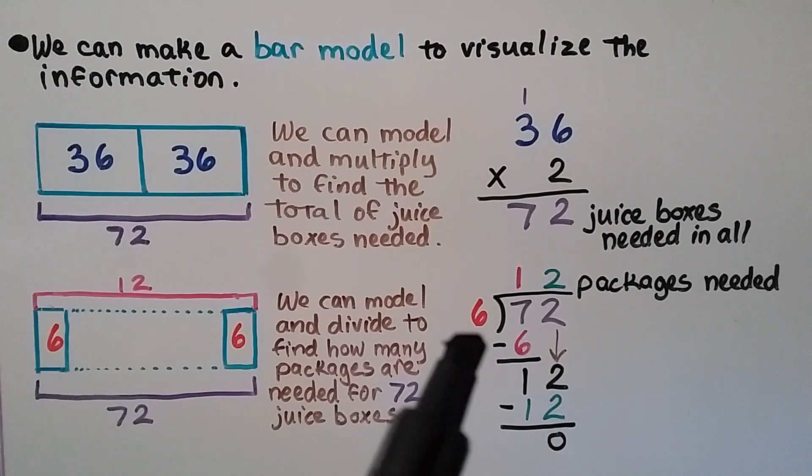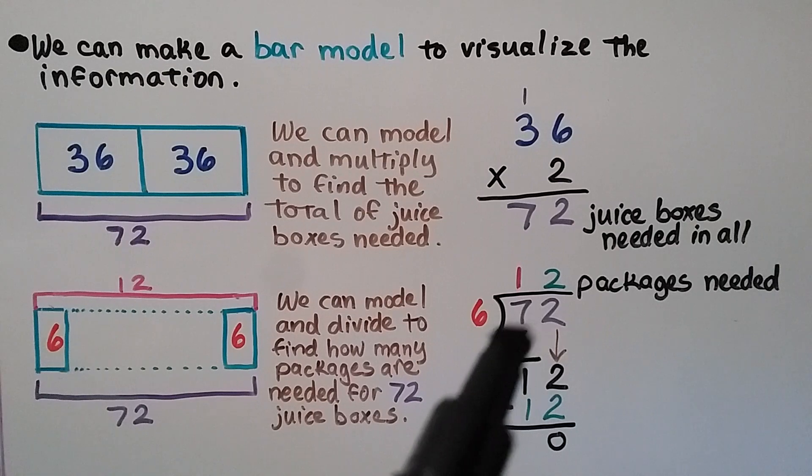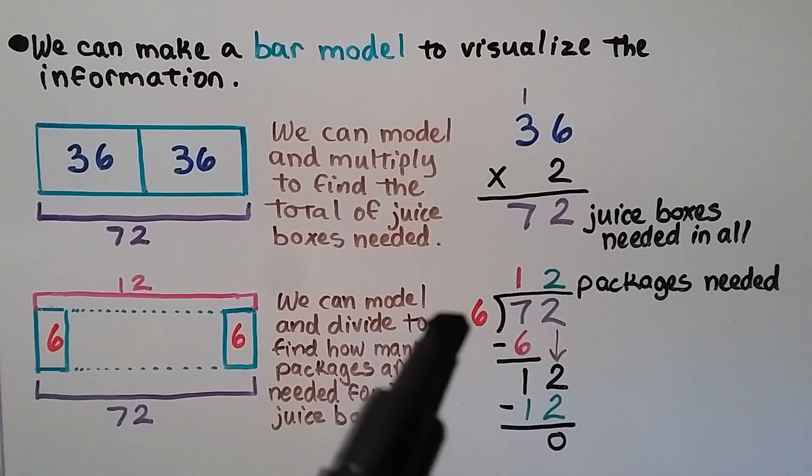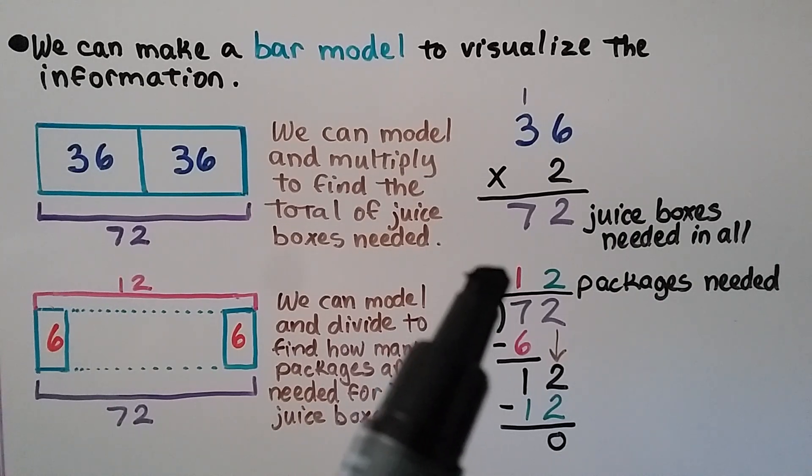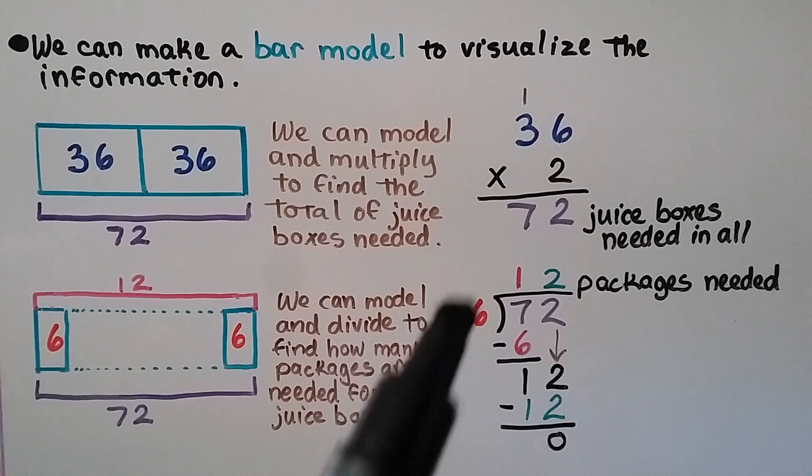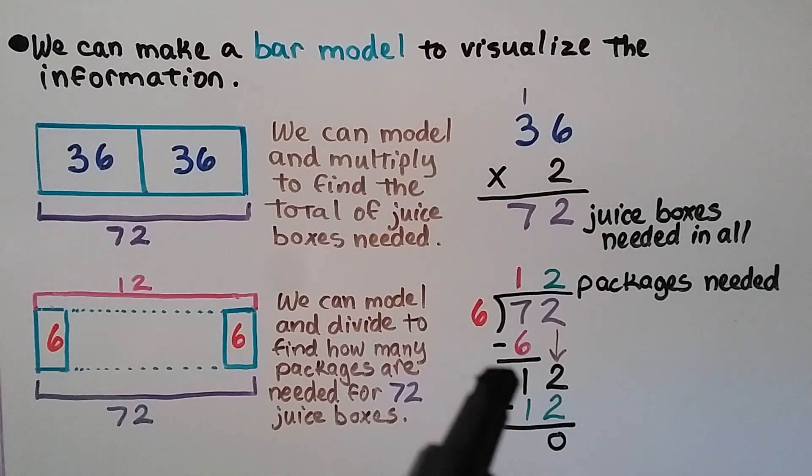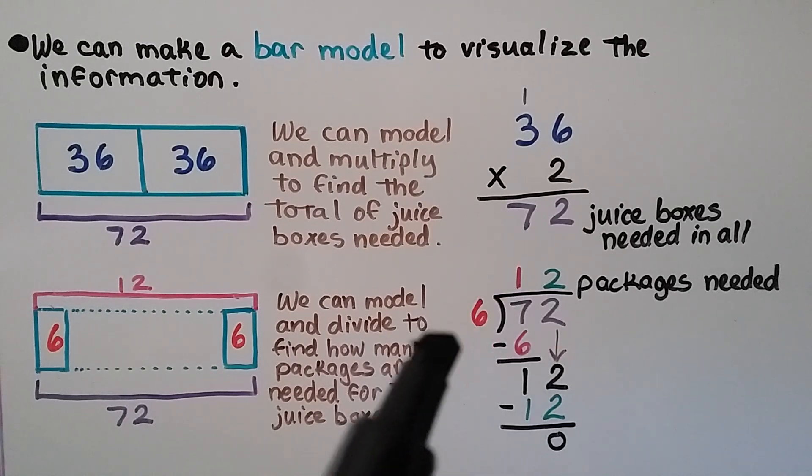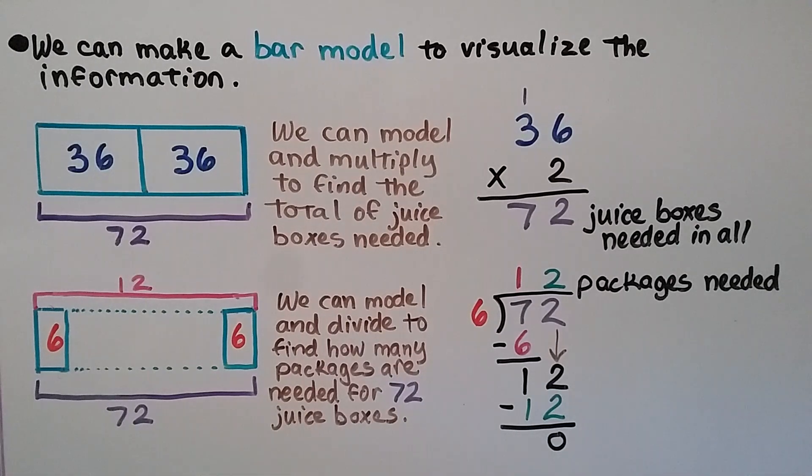We can divide 72 divided by 6. 72 juice boxes needed by 6 in a package. We ask ourselves how many times the 6 fits into the 7. That's 1 time. We put a 1 above the 7. 6 times 1 is 6, so we subtract it and get a 1. We bring the 2 down. 6 fits into 12 two times, because 6 times 2 is 12. We subtract it and get a 0 remainder. We know we need 12 packages of juice boxes.